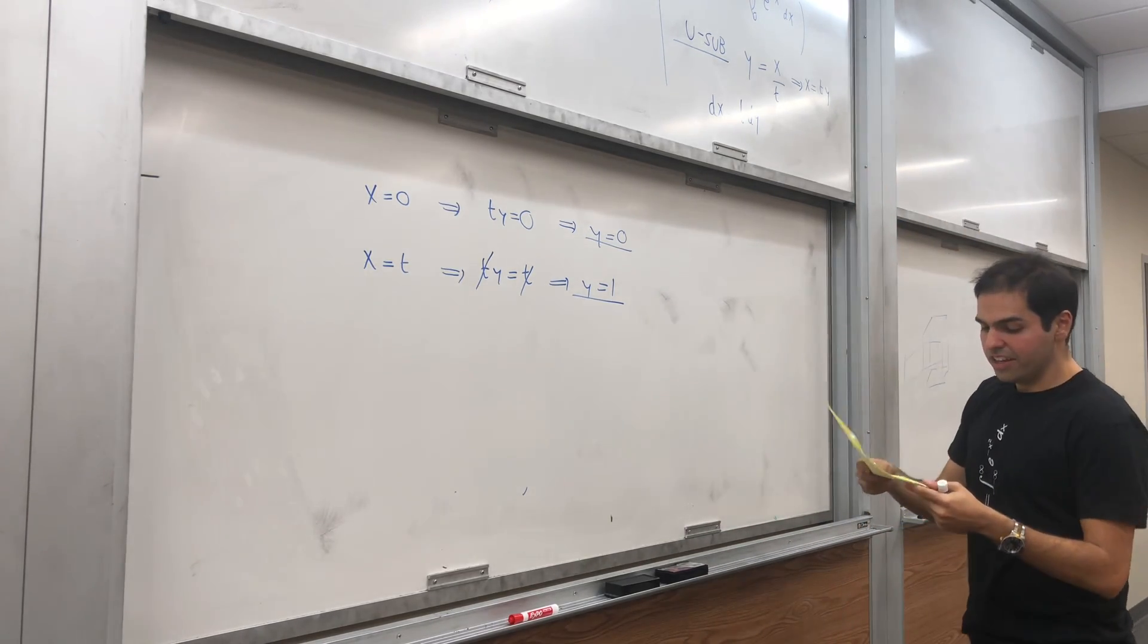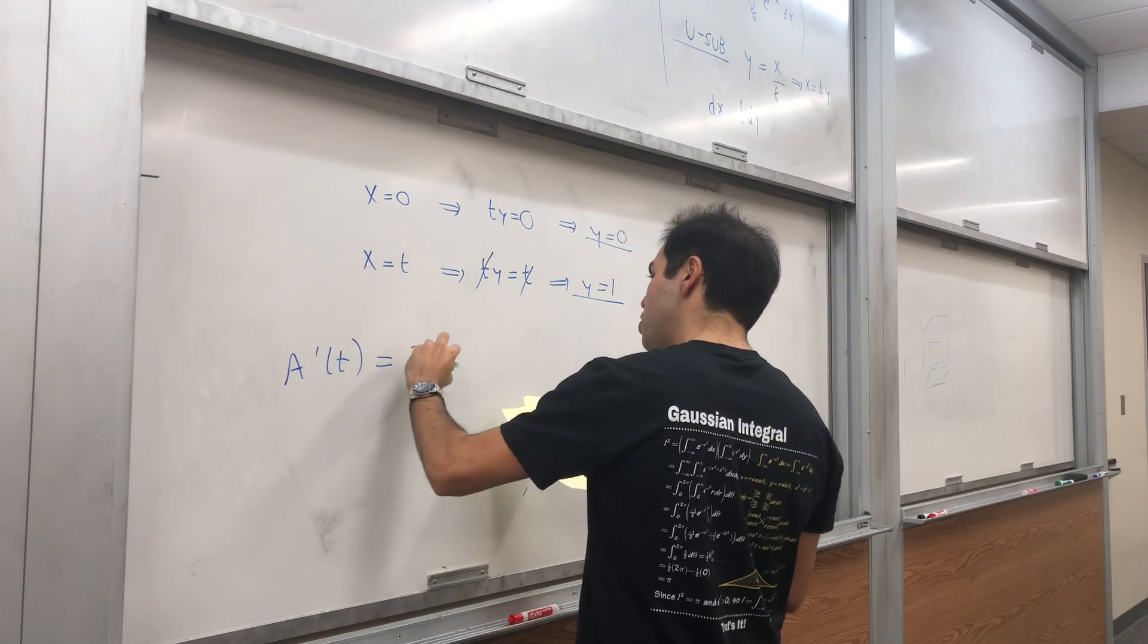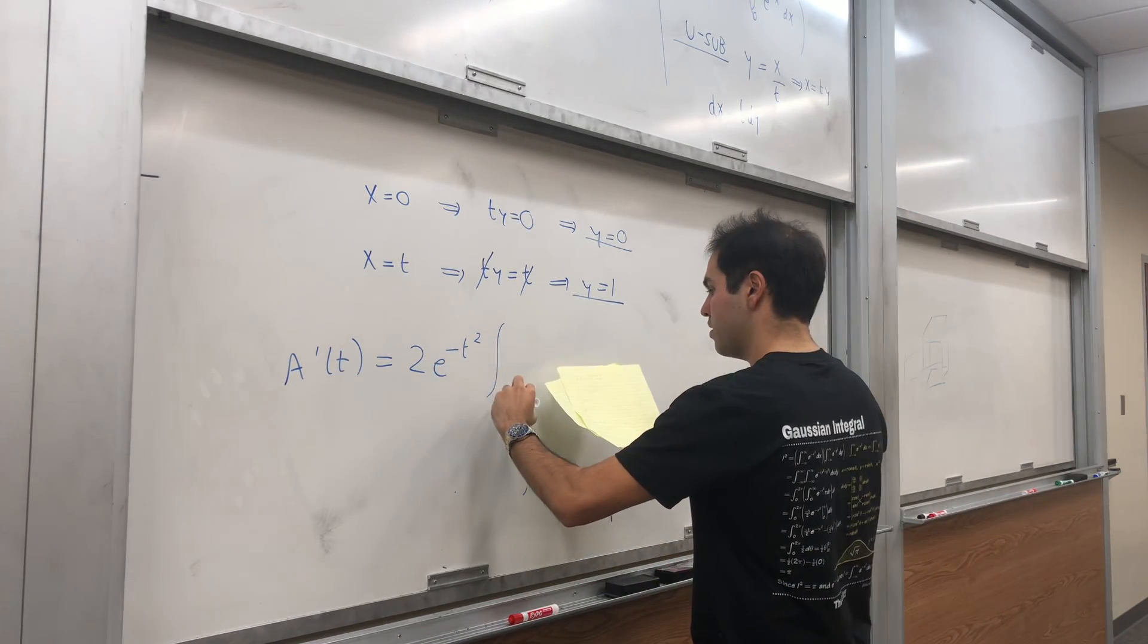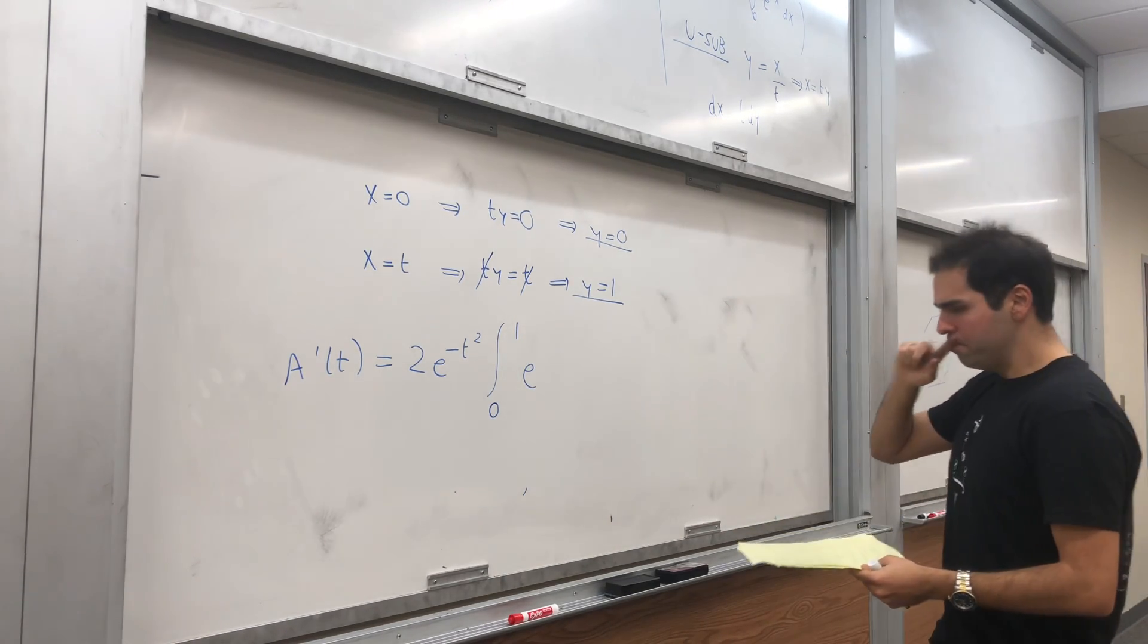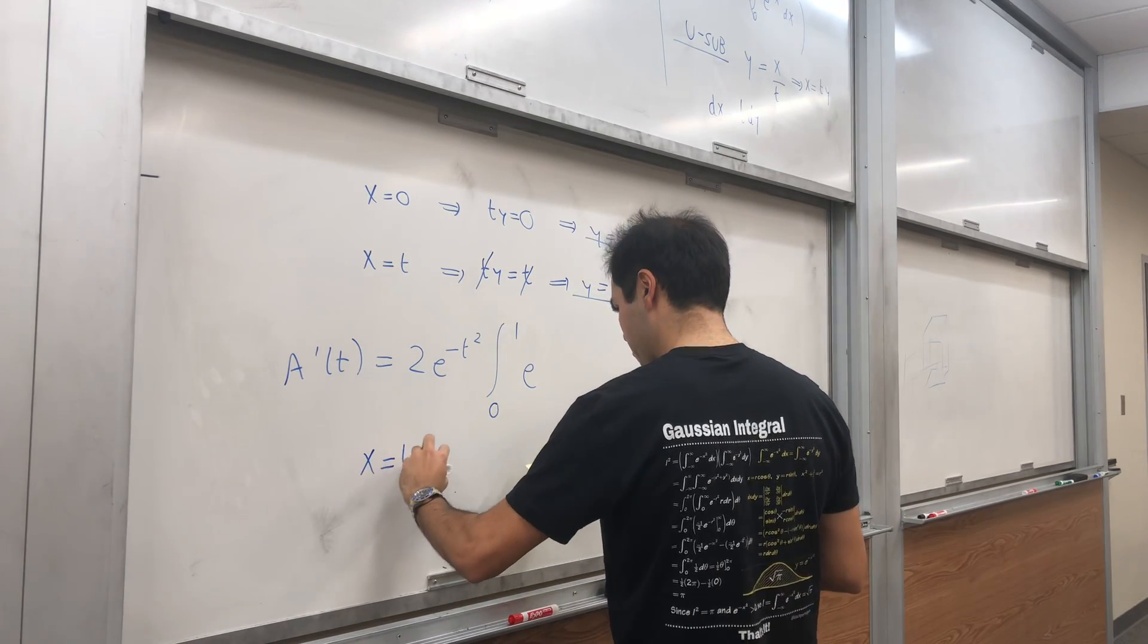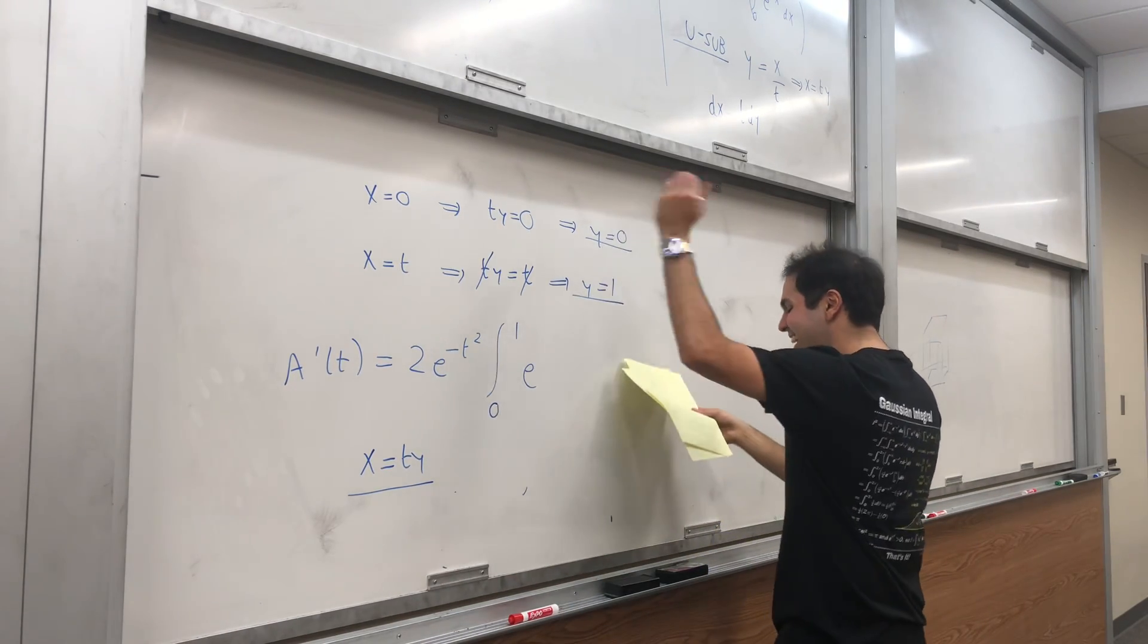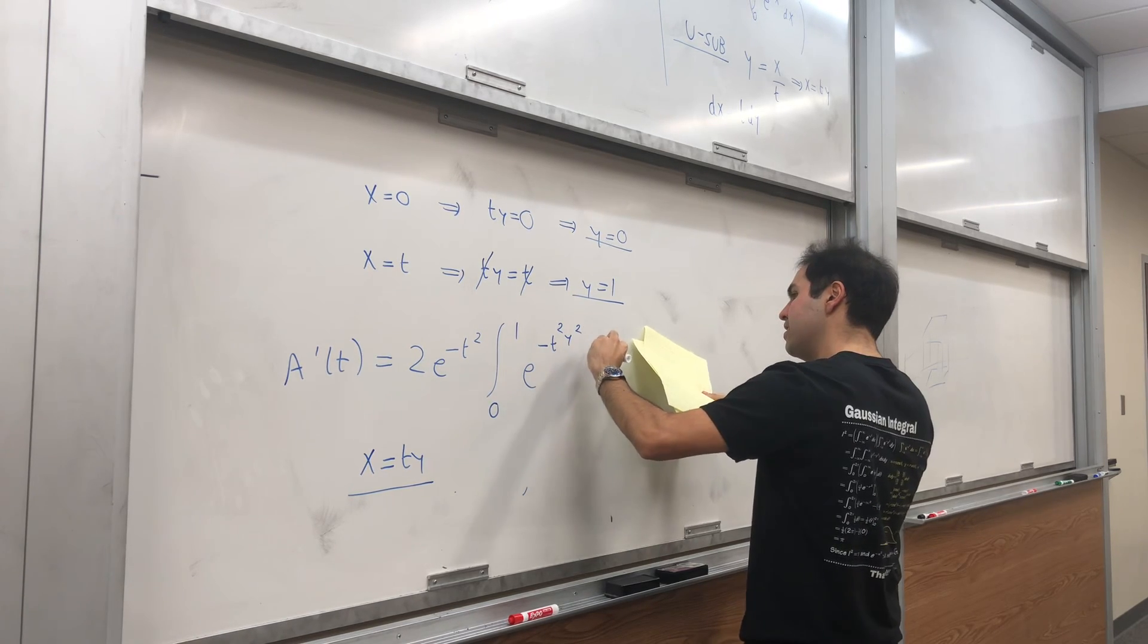And so in the end, the integral, so a prime of t becomes 2e of negative t squared. Our new end points are 0 and 1. And then e of negative x squared. But I'd like to remind you that x equals to ty. I just realized, thank you, next. Okay, so ty, and we get e of negative t squared y squared, t dy.